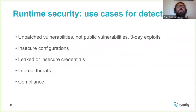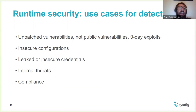There are many use cases for detection. For example, even if we have image scanning in our CI/CD pipeline, vulnerabilities that don't have a public CVE won't be captured by those mechanisms. So detection is going to allow us to monitor containers for anomalous behavior, which is how we catch anyone trying to exploit zero-day vulnerabilities. It can also be used to detect insecure configurations, leaked or insecure credentials, internal threats — like someone doing kubectl exec in a pod and making changes — and it's very important for compliance and audit. We want to audit any changes at runtime across our infrastructure.